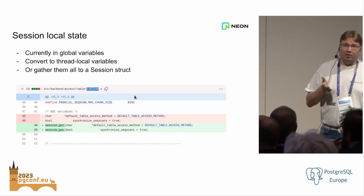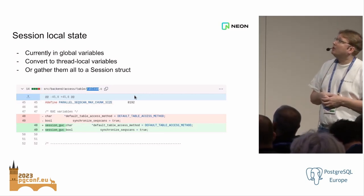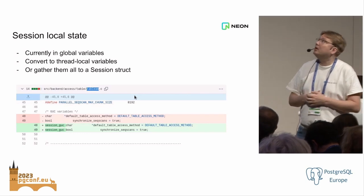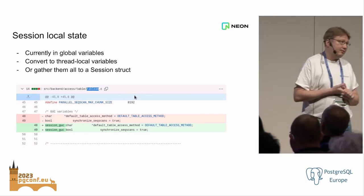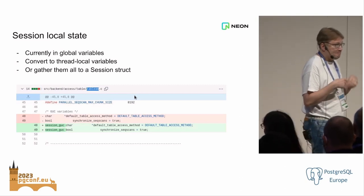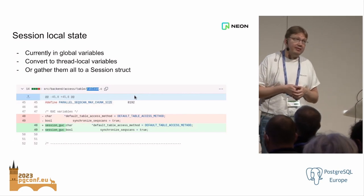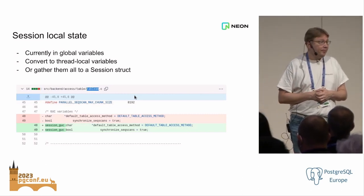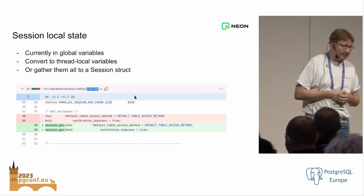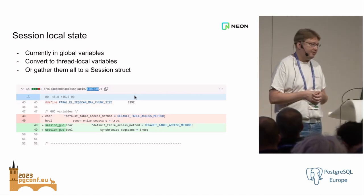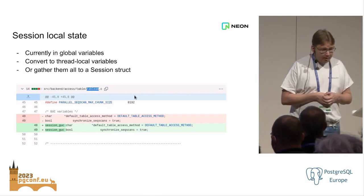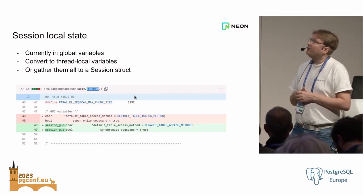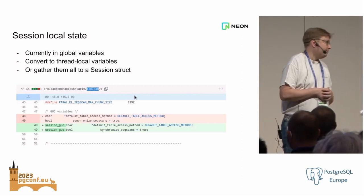There's a ton of global variables. I think I counted them — there are about 2,000 global variables in the Postgres code. A lot of them are GUCs, like settings you set in the config file. That's one big chunk of them. But there's plenty of others: a lot of session-local caches, a lot of back-end-private data structures initialized at startup, a lot of per-transaction state that gets cleared at the end of each transaction — a lot of different states with different lifetimes stored in global variables. That's fine in the multiprocessor architecture — there's nothing wrong with that. But all of these global variables that currently represent session-local state, specific to the one connection, will need to be converted to thread-local variables.